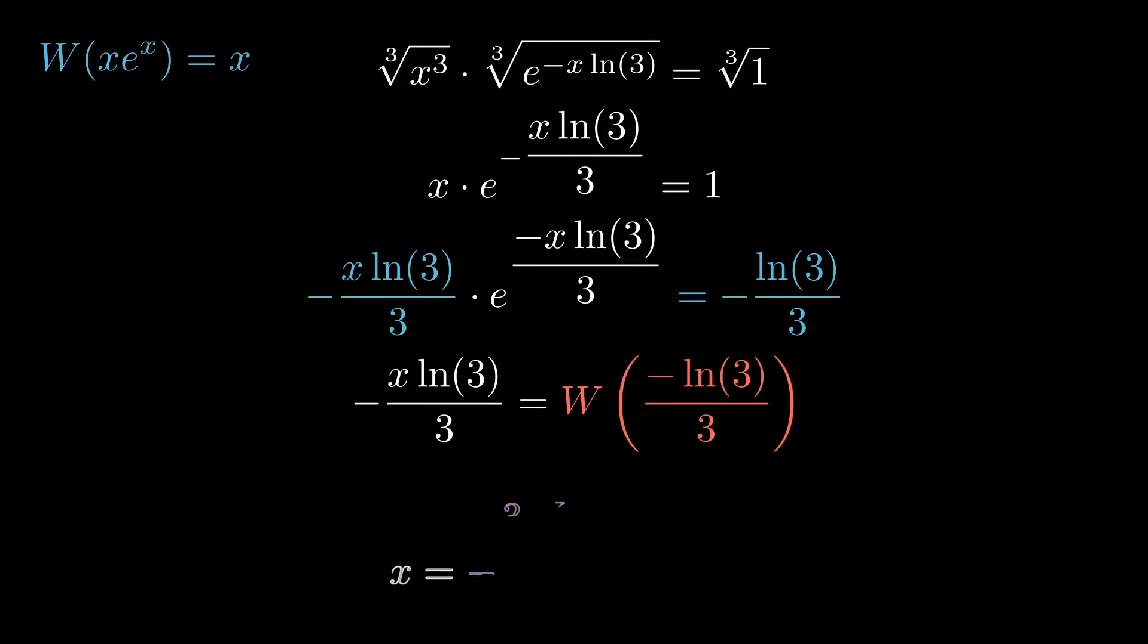And now we can solve for x using regular, straight-up algebra, multiply by a minus 3, divide by an ln of 3, and we have the exact value of x that solves this equation.